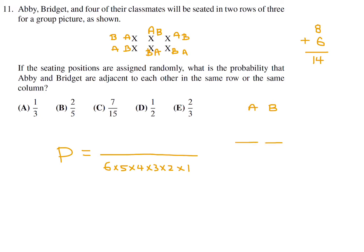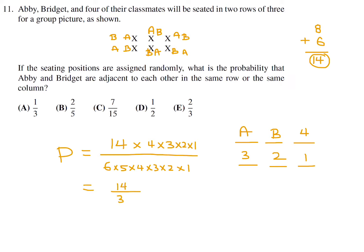When Abby and Bridget have been placed, we also have to account for the other 4 friends, who can be arranged in 4! = 24 ways. So the numerator is 14 times 4!, and the denominator is 6!. This reduces to 14 over 30, which is 7 over 15. Therefore, number 11, the answer is C.